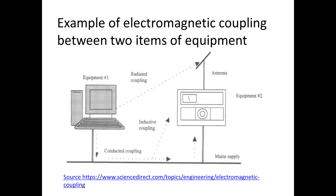Examples of electromagnetic coupling between two items of equipment: Equipment 1 and Equipment 2 are connected via a common main supply, meaning power comes to both via the same supply. There are three types of coupling shown: radiated coupling, conducted coupling, and inductive coupling. As one element of interference, an antenna is visible with Equipment 2. Equipment 1 demonstrates EMI coupling via radiation, conduction, and inductive coupling.